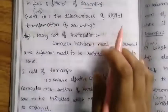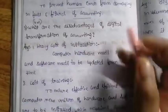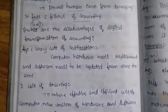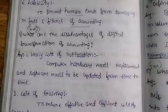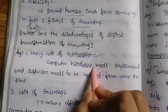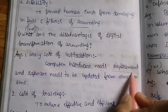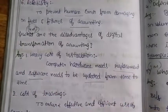What are the disadvantages of digital transformation of accounting? This is a four-marks question. First disadvantage is heavy cost of installation — including hardware purchase, replacement, software, and updates.